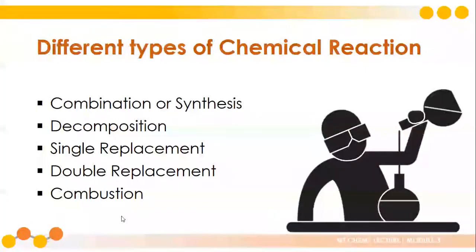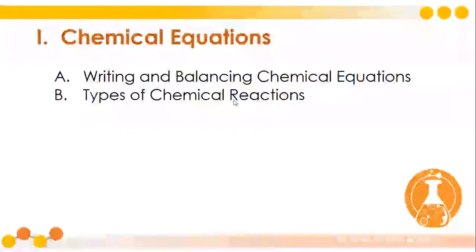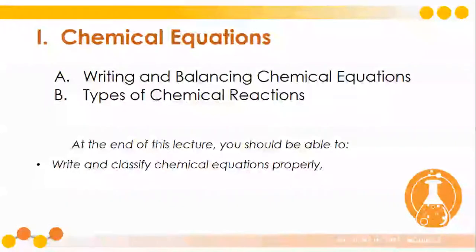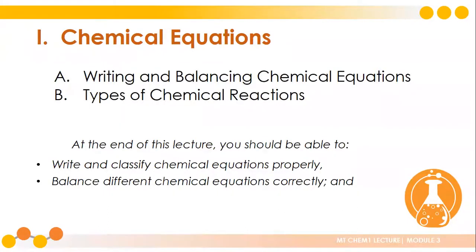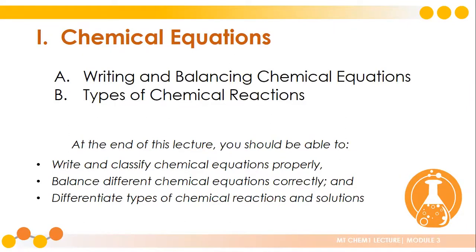Let's go back to our objectives for the first part of Module 3 on chemical equations. We're done discussing writing and balancing chemical equations and the different types of chemical reactions. We've written and classified chemical equations properly — they are more convenient and easier to visualize the chemical process. We've also balanced different chemical equations correctly and differentiated the types of chemical reactions: combination, decomposition, single replacement, double replacement, and combustion.